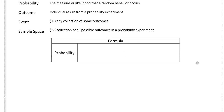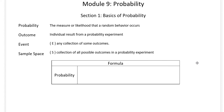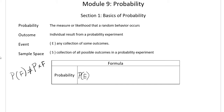Now let's talk about the actual formula. For probability, we write it as P parentheses E, or P(F), etc. This is read as 'the probability of the event E.' This does not mean P times E — that's not what this means. This is specific notation, kind of like how we use a square root symbol. When we write P with parentheses, we are saying 'the probability of whatever is on the inside.'